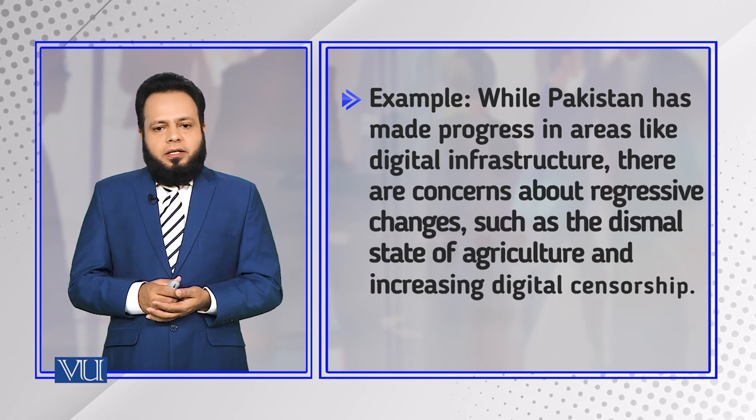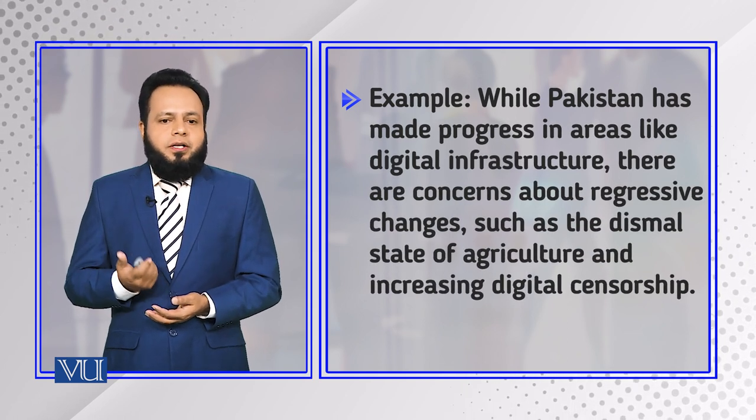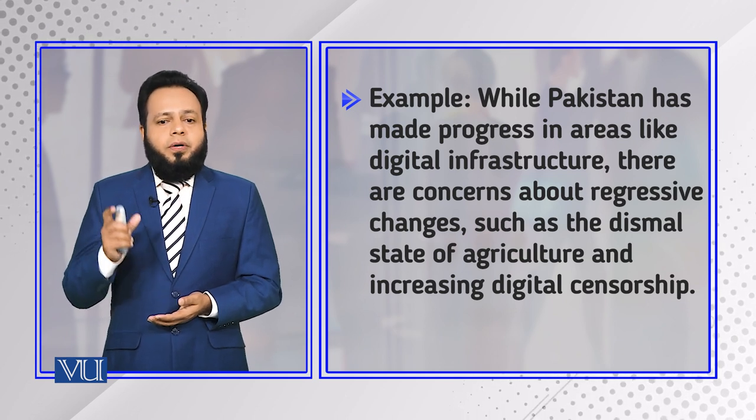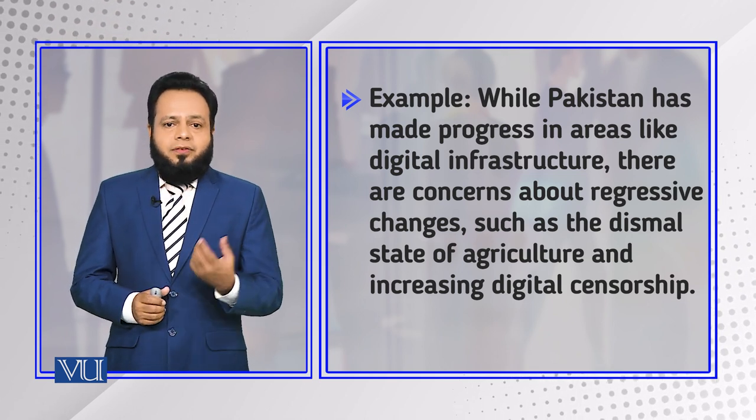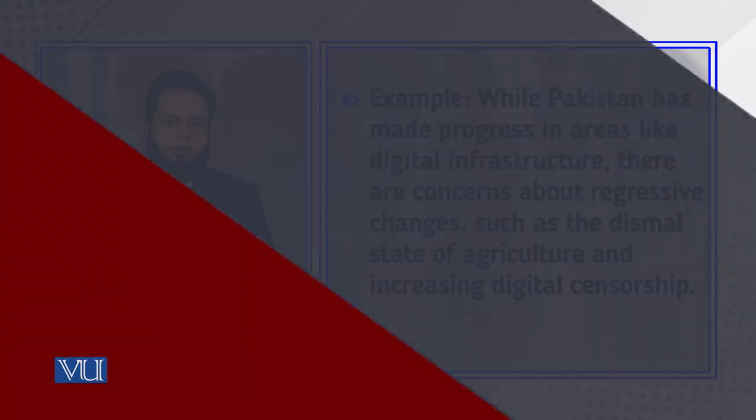For example, in Pakistan, progress has been made in areas like digital infrastructure. However, there are concerns about regressive changes such as the declining state of agriculture and increasing digital censorship. More and more housing societies are being constructed on agricultural lands that were once fertile and were the source of food production. Unfortunately, food is becoming more and more expensive as we are compromising agricultural land by producing more and more housing societies.